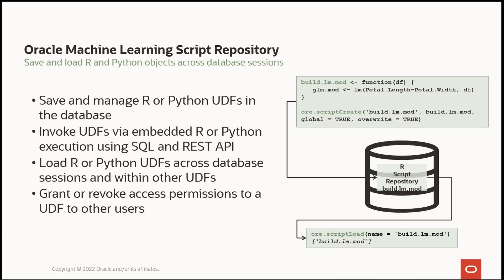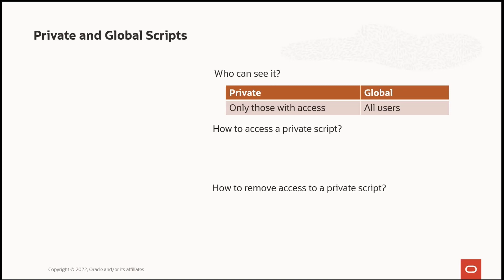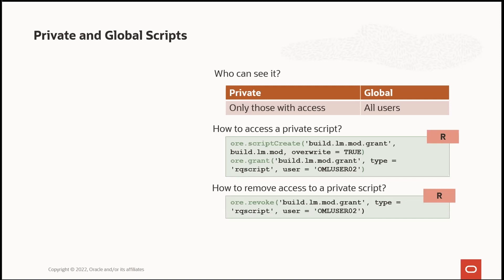It's important to understand the difference between private and global scripts. For a private script, only those with access can retrieve it, while a global script is available to all users. To grant access to a private script, when you store a script in the repository without specifying global, you use ORI grant to give access to specific users. The same applies for revoking access using ORI revoke. These commands can be performed in R, Python, and also SQL.